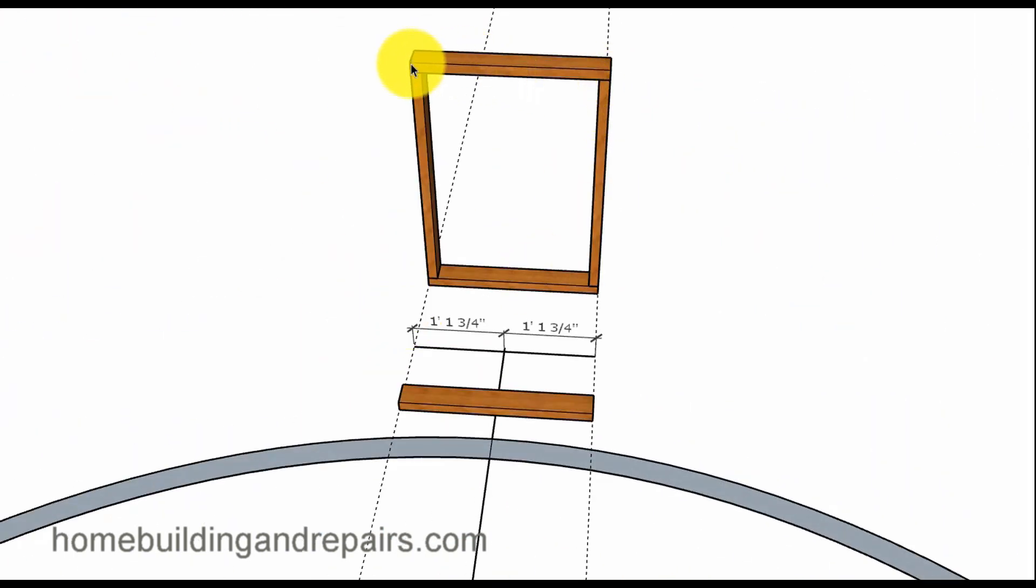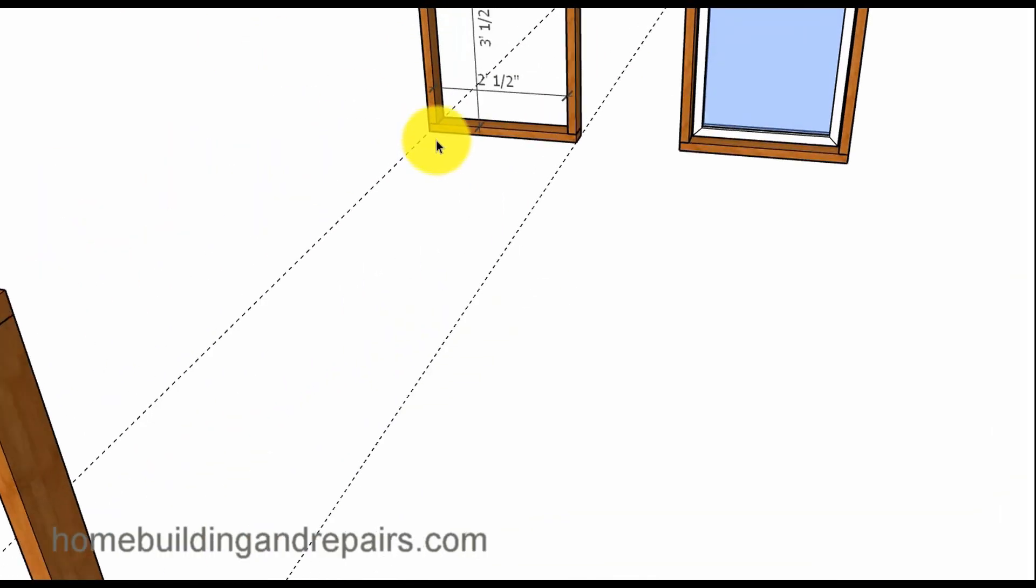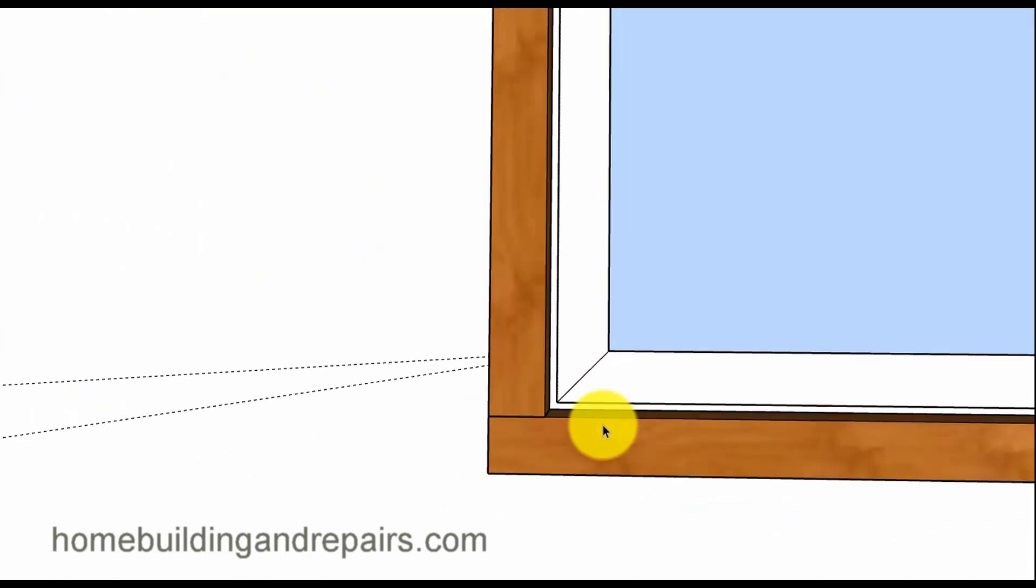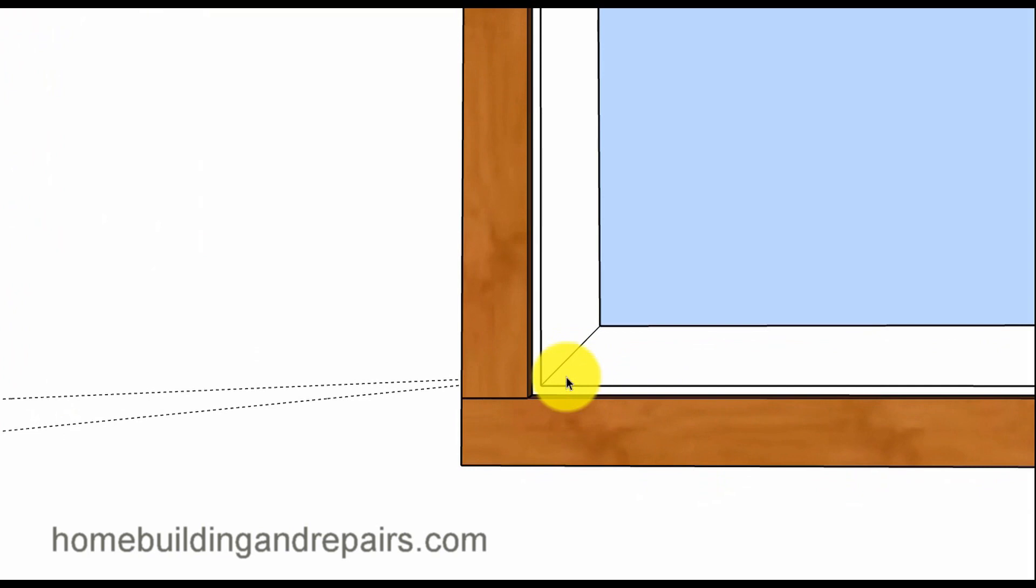Now what I have here is a box that the window is going to go into. I just want to jump ahead here to give you an idea what we're looking at. The window would set in like this. Don't forget to allow for your quarter inch gap between the window and the wood framing or whatever the window manufacturer calls out.